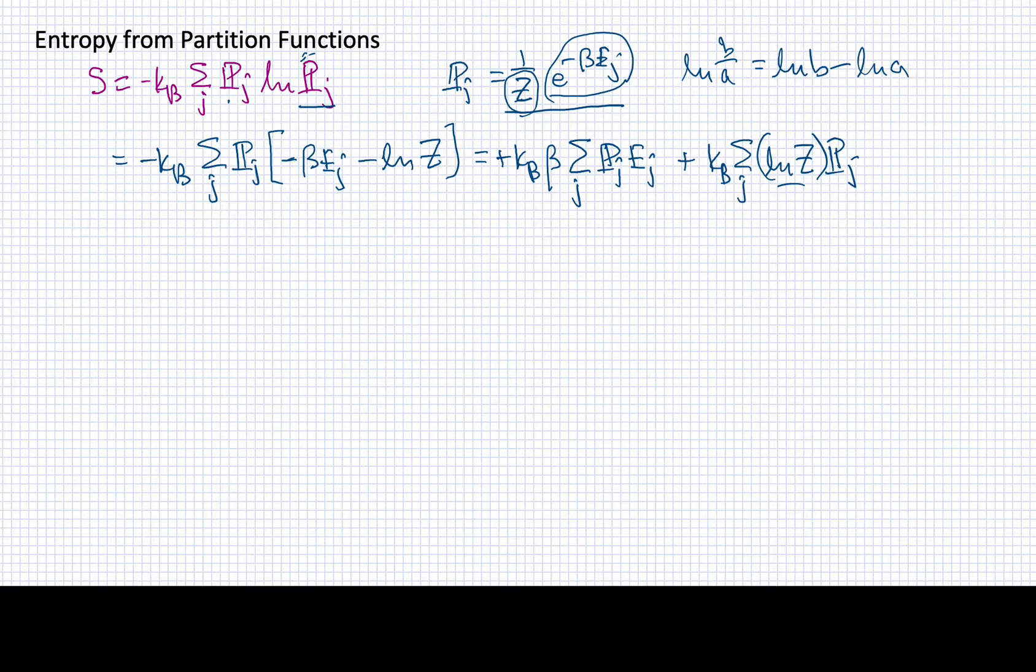The log of z doesn't depend upon j, so I can bring it outside of the summation. I'll point out that this combination of factors, kb times beta, is just going to give me a one over temperature.